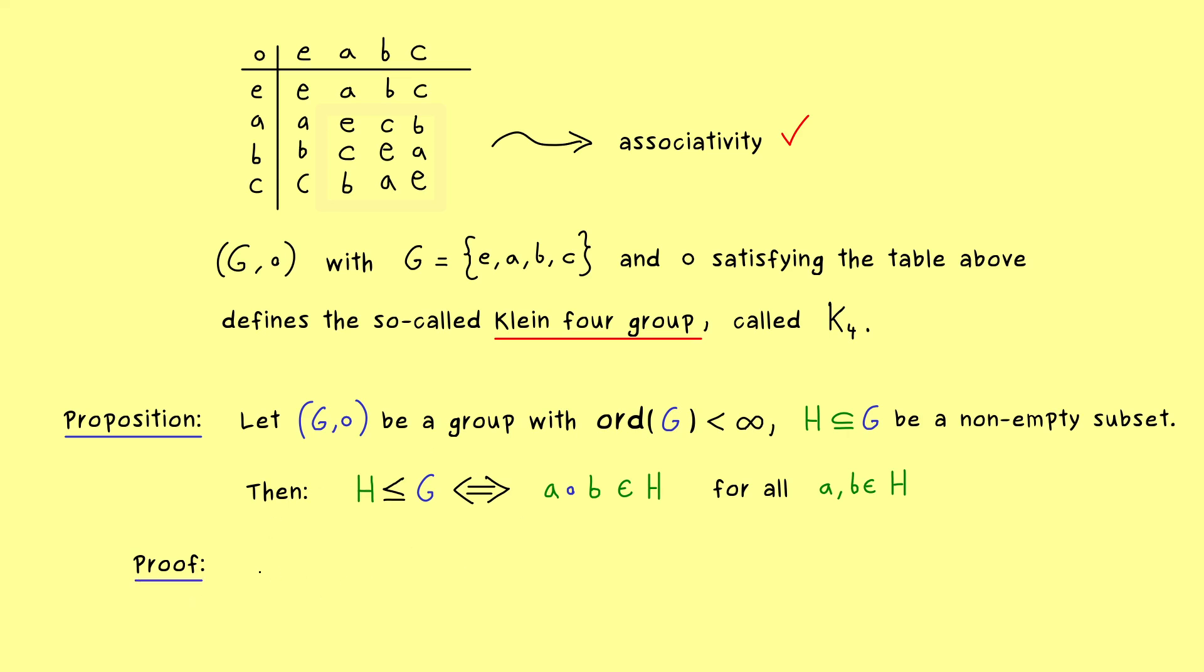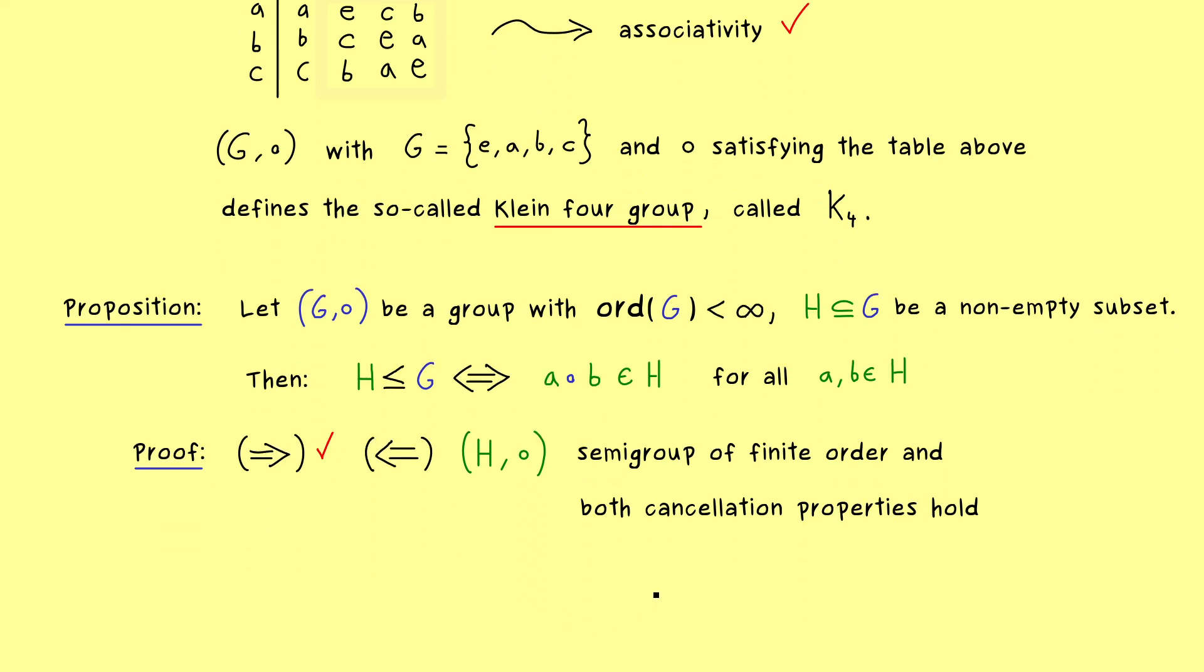And here I can tell you the proof of this statement is very simple. In fact, going from left to right, we have already done with the proposition above, so we have discussed it in the last video. Hence let's show that everything follows from this one condition. And as I have already explained, this one condition just tells us that the binary operation is well defined on H. So the first conclusion is that H with the binary operation is a semi-group. And since H is a subset in G, it's also of finite order. And moreover, we also get from the group G that both cancellation properties hold as well.